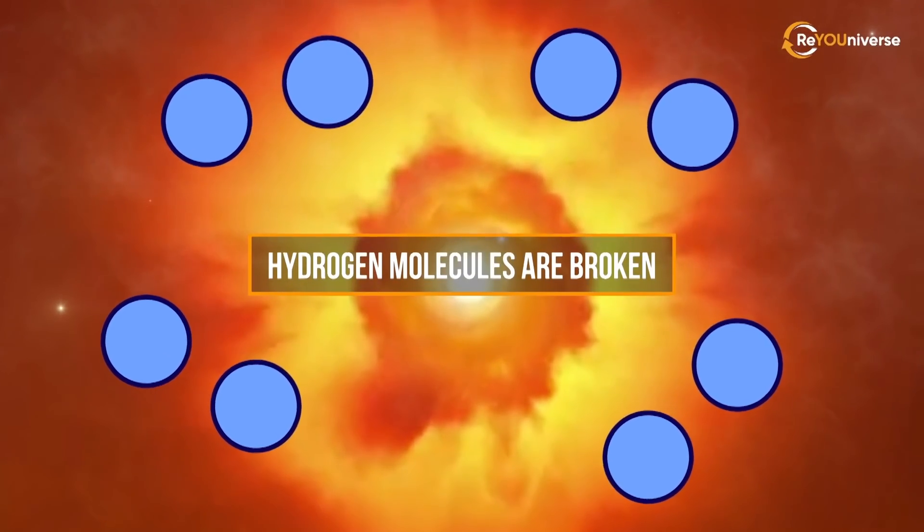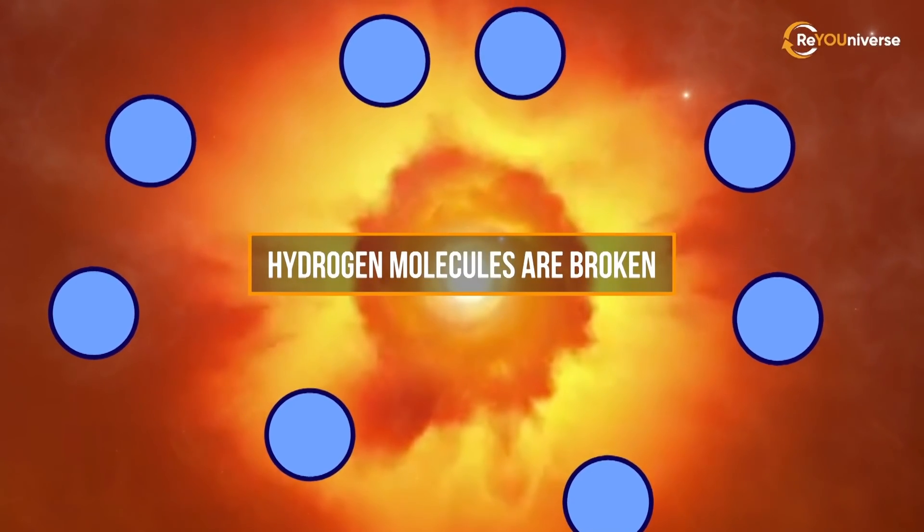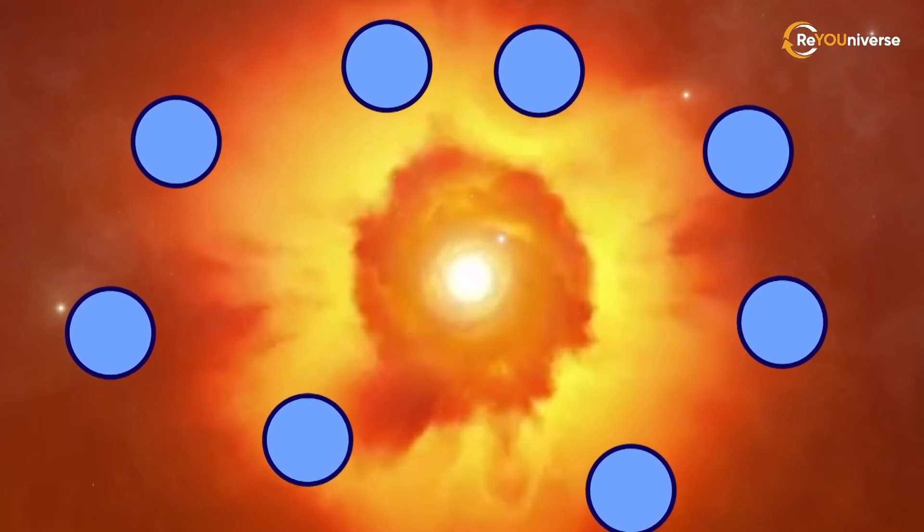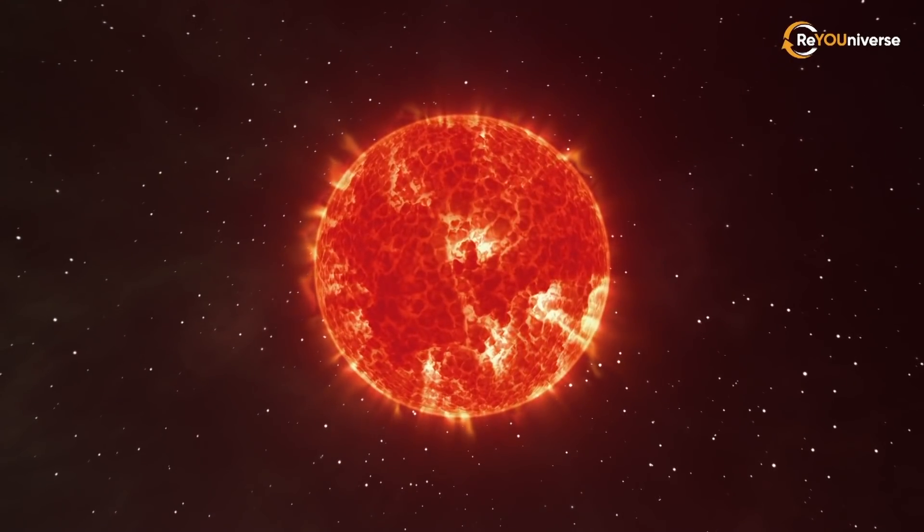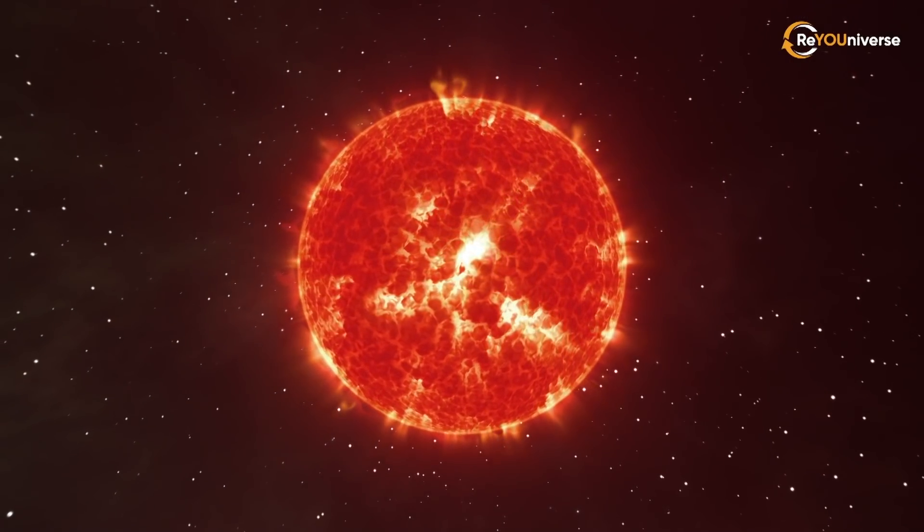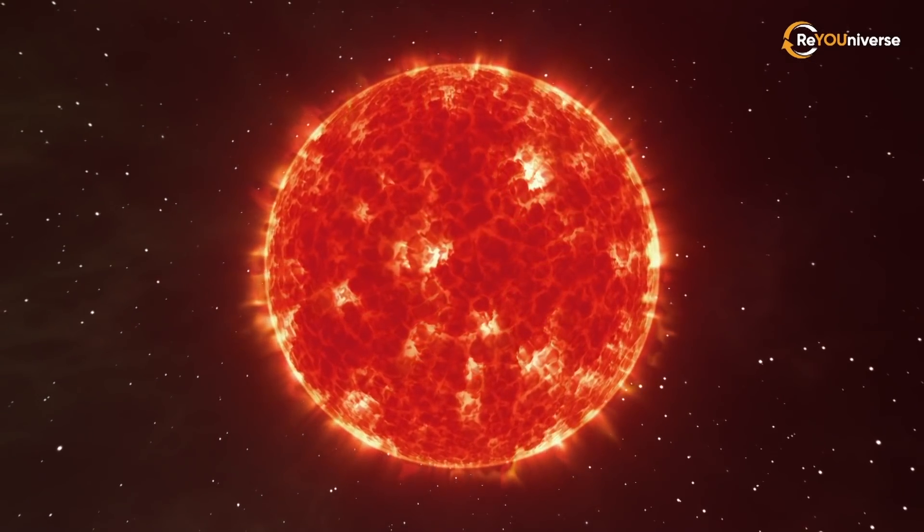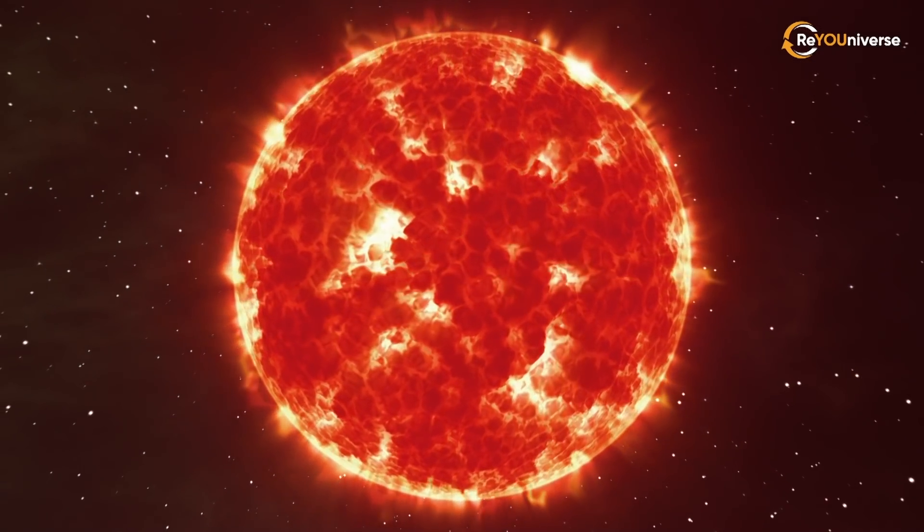Hydrogen molecules are broken into atomic hydrogen, while alkali metals are ionized. The atmosphere resembles that of a low-mass star instead of a planet, composed of atomic hydrogen and helium.